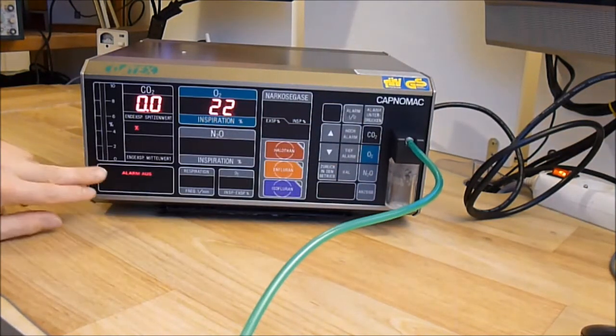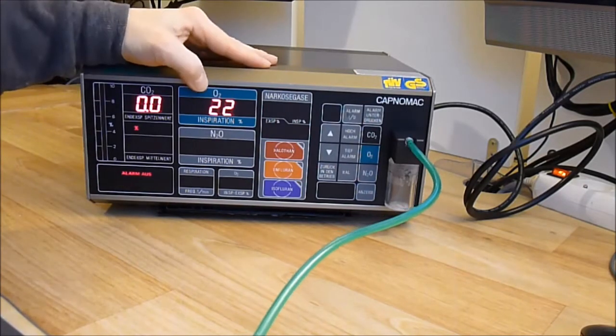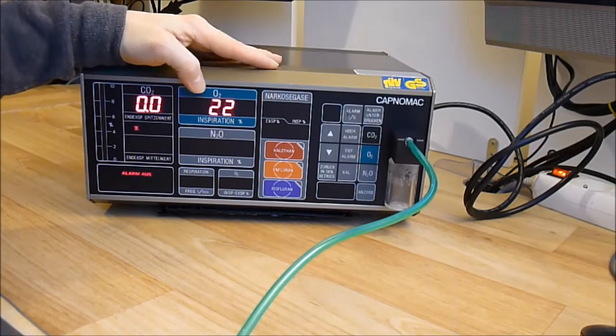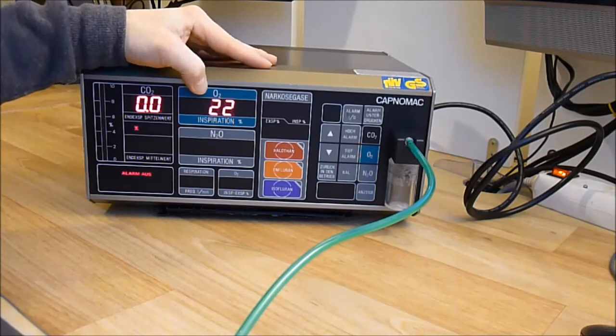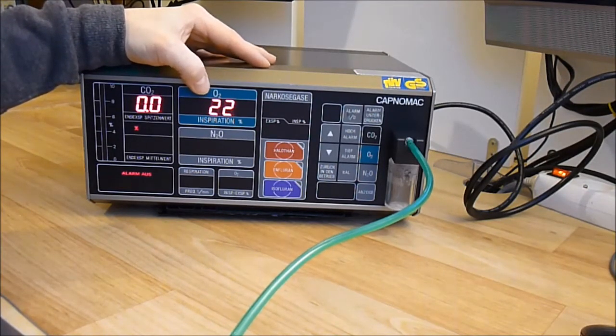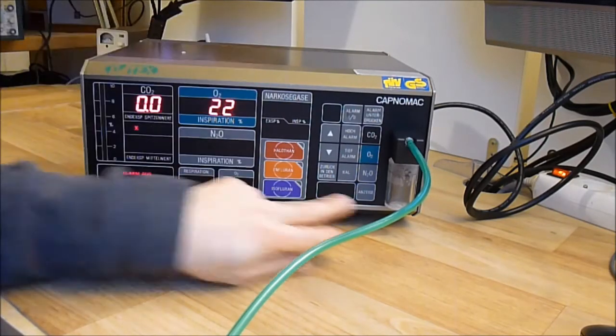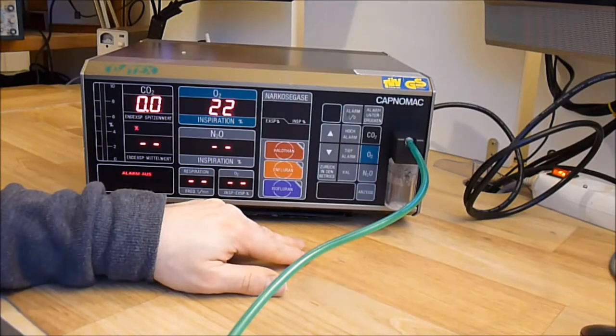So I disable the alarm because it is making noise. So you can see the O2 number here seems about right. It is believed to be 21% of air, so it should be right. I activate the other displays.